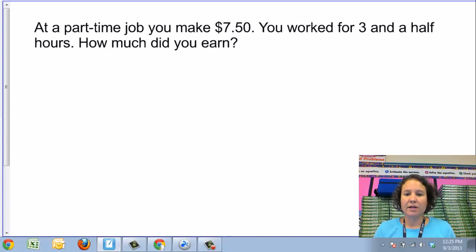I can see that I'm going to need to take the amount that I make per hour, $7.50, and multiply that by the number of hours that I worked, 3.5 hours. Since I'm talking about multiplying decimals, I'm going to write 3.5 hours as a decimal.